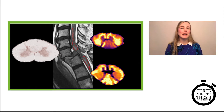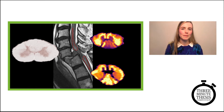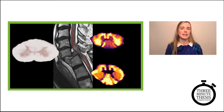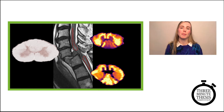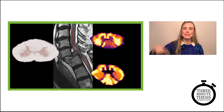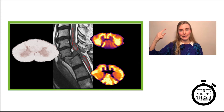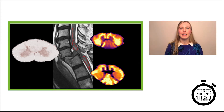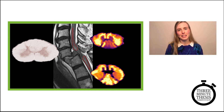In the middle is grey matter, which is shaped a bit like a butterfly, and surrounding it is white matter. The white matter is composed of nerve fibers, which carry signals from the brain to the body and back again. Surrounding each fiber is myelin, which is a protective insulating layer of fatty tissue.